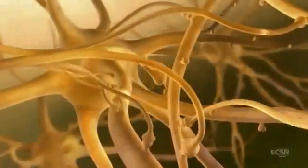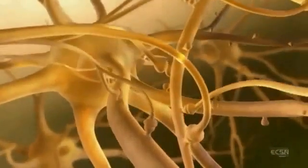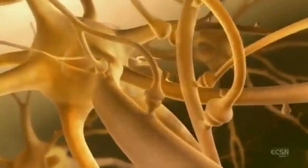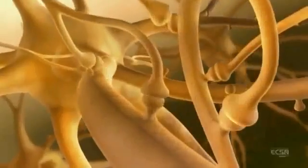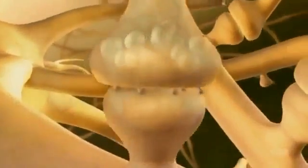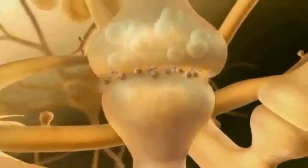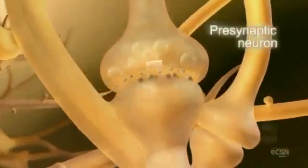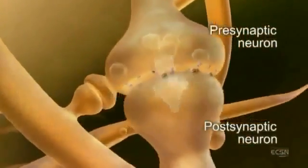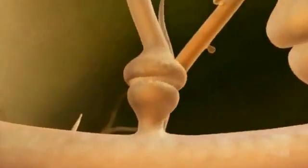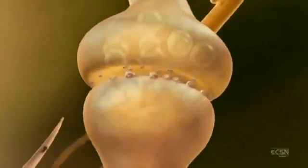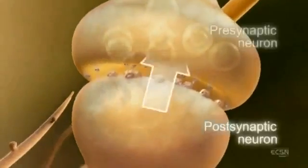Within the brain, CB1 receptors are among the most abundant G-protein-coupled receptors. However, in contrast to classical signaling, where information travels from pre- to post-synaptic neurons, the ECS uses retrograde signaling — the information travels from post- to pre-synaptic neuron.